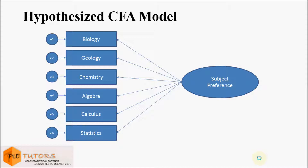Model fit measures could then be obtained to assess how well the proposed model captured the covariance between all the items or measures in the model. If the model specified is inconsistent with the sample data, then the results of statistical tests of model fit will indicate a poor fit and the model will be rejected. If the fit is poor it may be due to wrong specification within the model, or it might also be that some items within a factor are more correlated to each other than others.